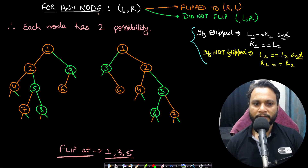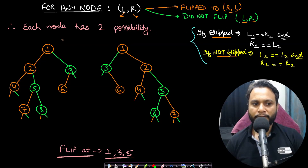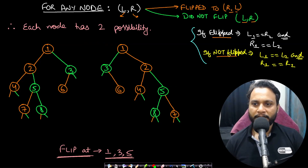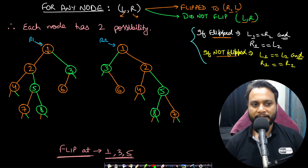For any node there may be a flip happening or there may not be a flip happening. If we have L as the left pointer and R as the right pointer, and a flip has happened, it changes to R, L. If a flip did not happen, it remains L and R in the second tree as well. We need to find out if we can get the second tree from the first by doing flip operations at any chosen node. If we assume a flip has happened at a node, we go to the left side in the first tree but the right side in the second tree.